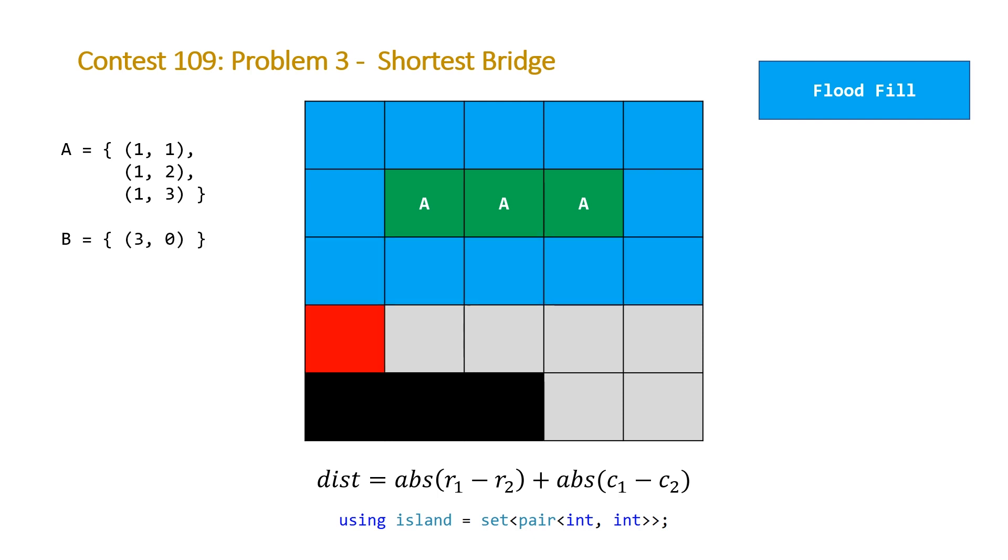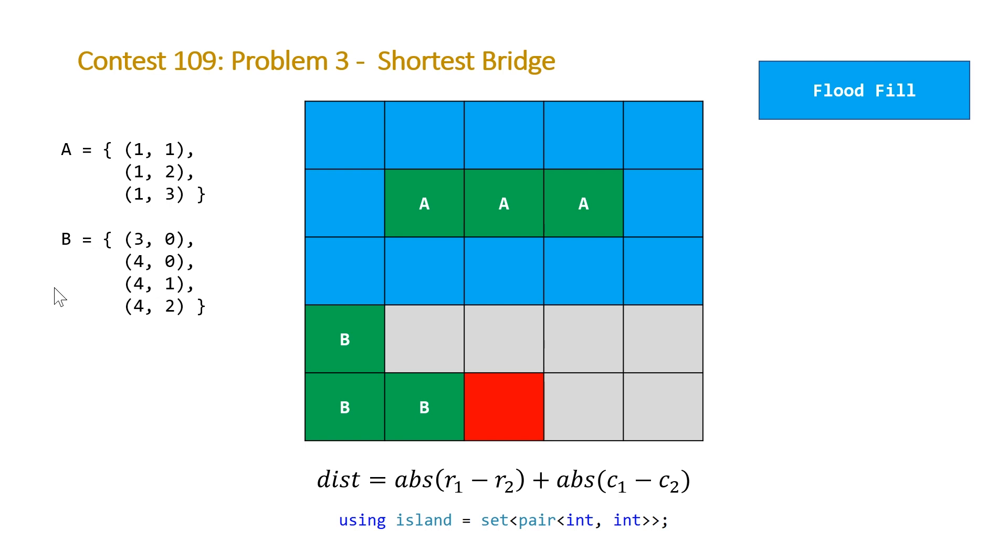Here we're just back in our nested for loop. At this point, we hit our second island. This element has a value of one and it's not in our first set of pairs. So at this point, we enter our second flood fill, fill the points in our island B. At this point, we're done. You can either break out of your nested for loop or continue to do it. Both will work in terms of the solution.